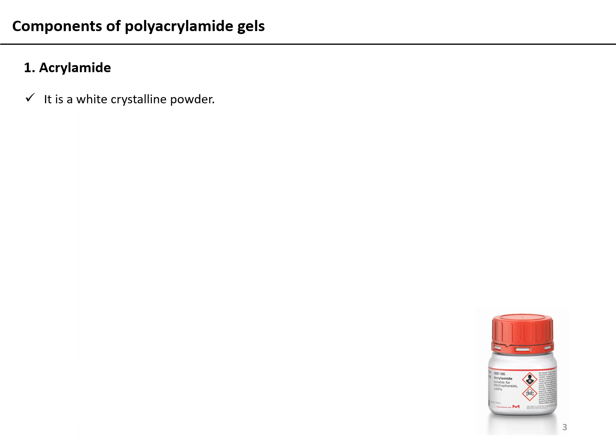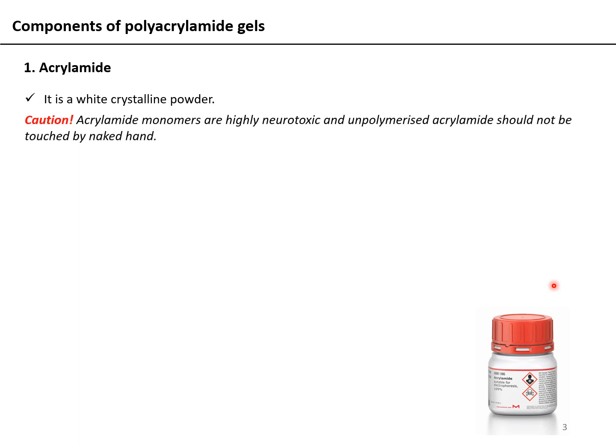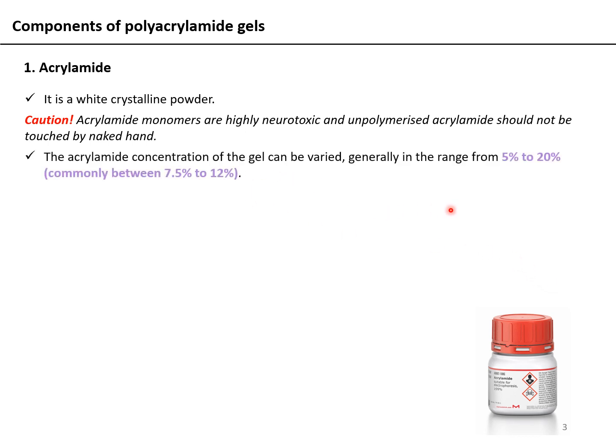Polyacrylamide gel is what we commonly use for separating proteins on the basis of their size in SDS-PAGE. Acrylamide is one of the key components — it is essentially a white crystalline powder dissolved to prepare a solution. Importantly, acrylamide monomers are very neurotoxic, so always wear gloves and masks when handling them. The acrylamide concentration of a gel can vary from 5 to 20 percent; higher concentration means a more dense gel with smaller pore size, resulting in greater retardation of migrating molecules and affecting the resolution of the gel.